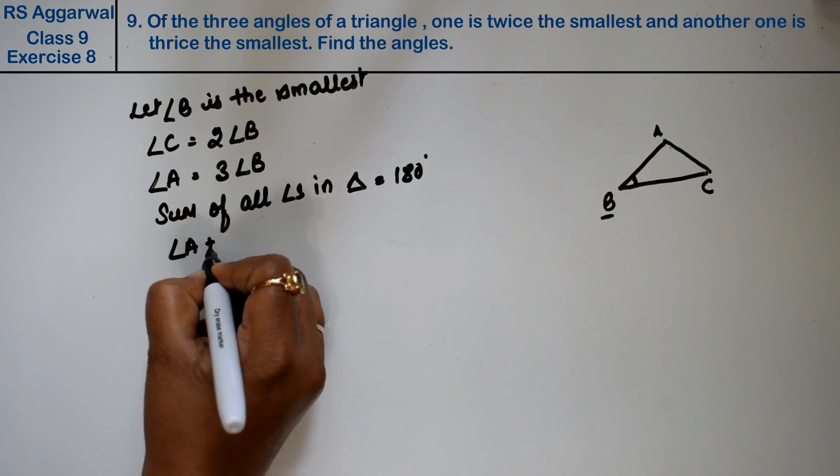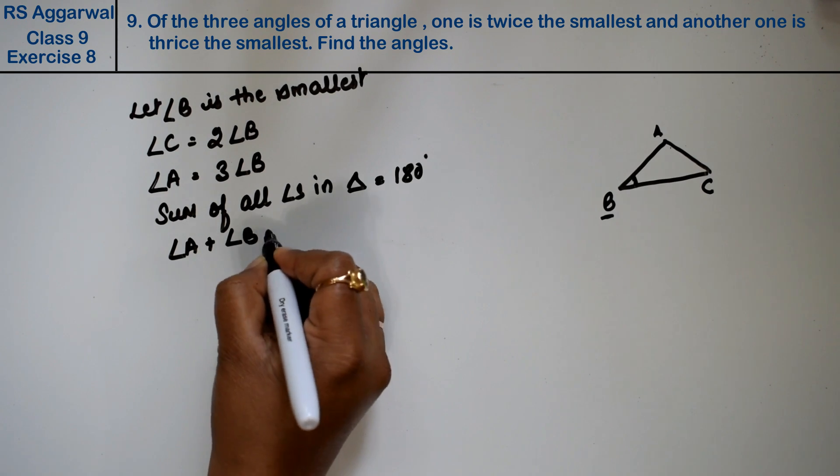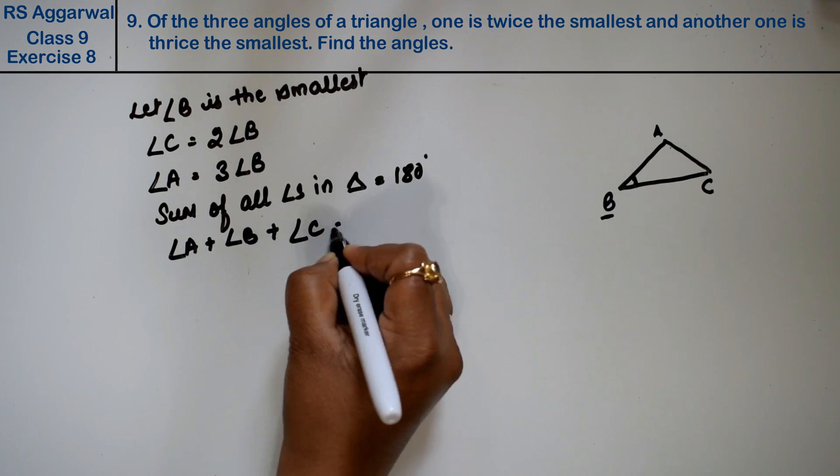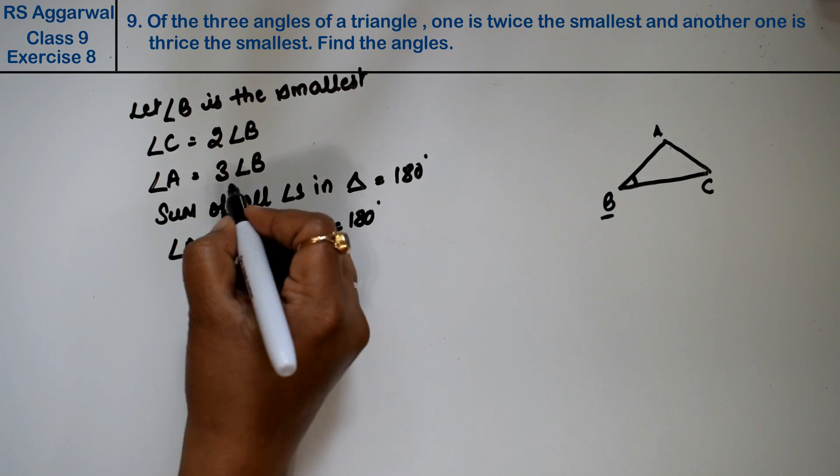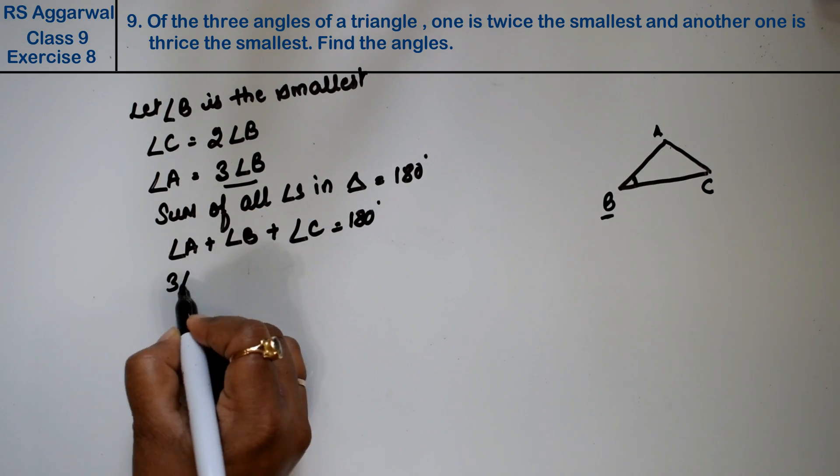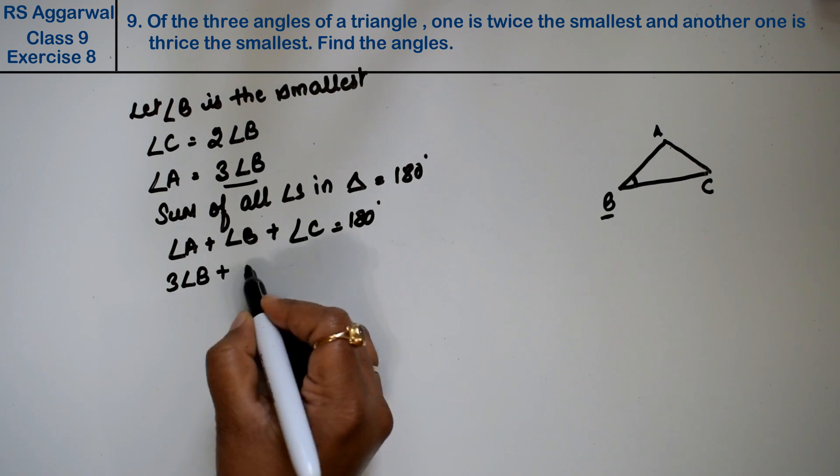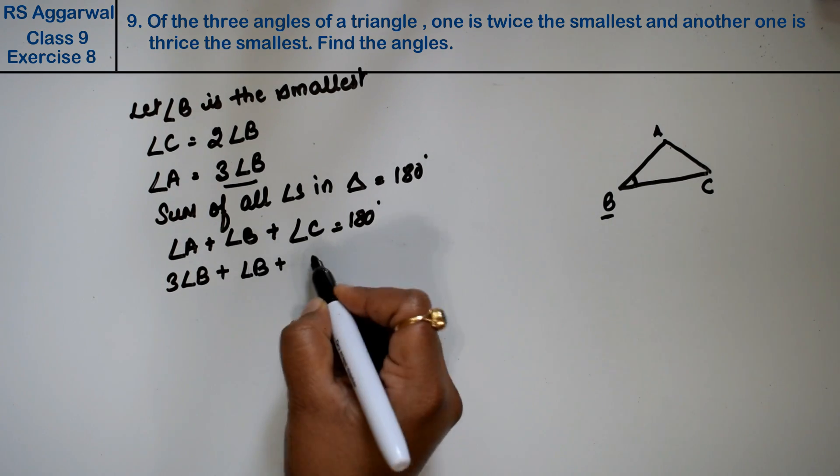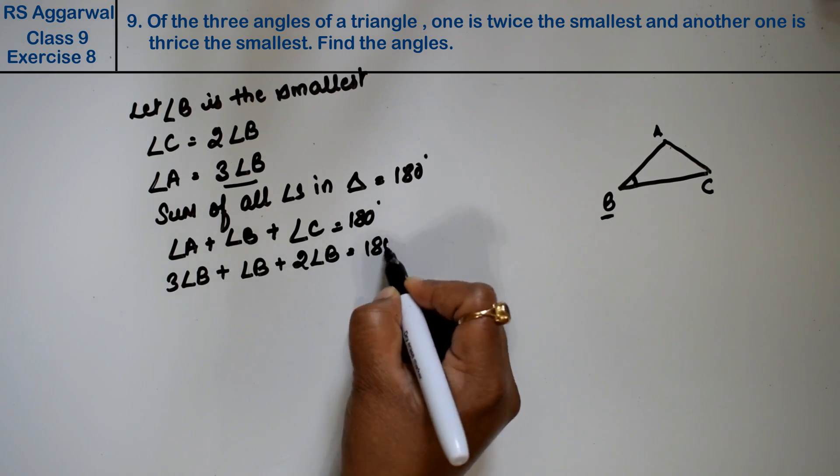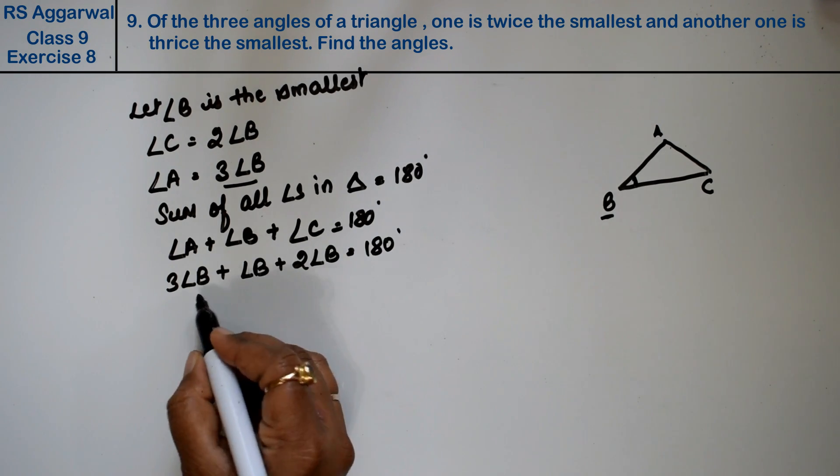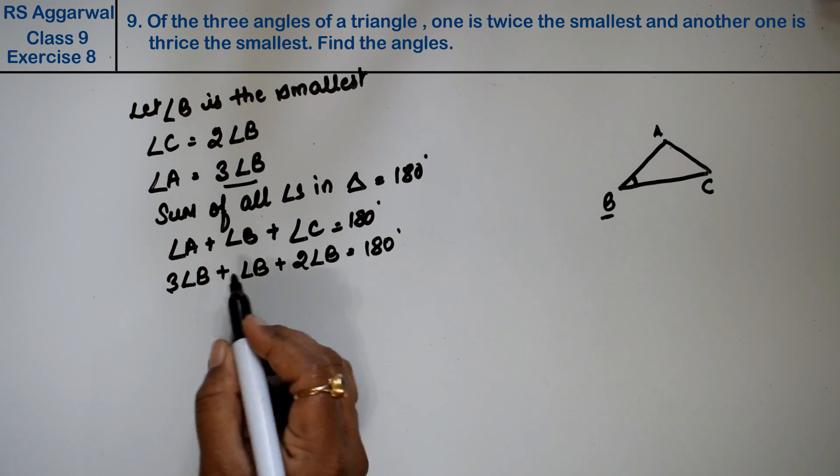Angle A plus angle B plus angle C equals 180. Substituting our relationships: angle A is thrice of angle B, so that's 3 times angle B.